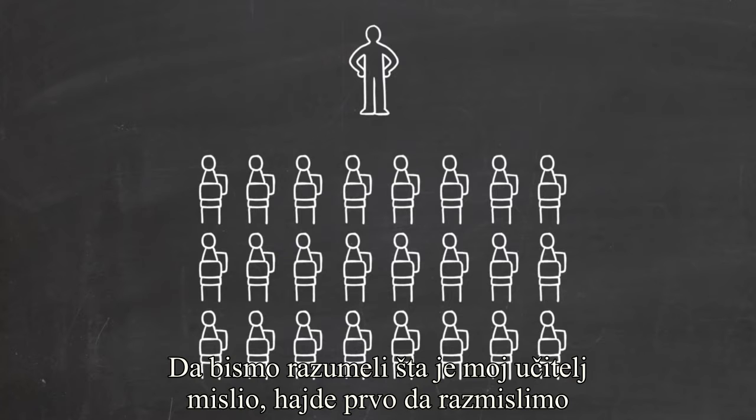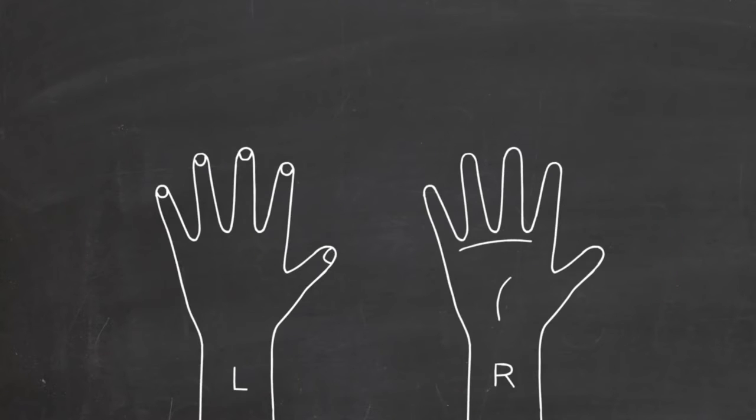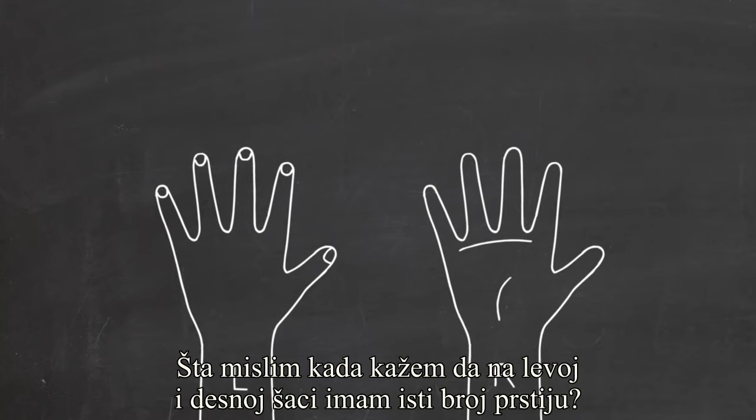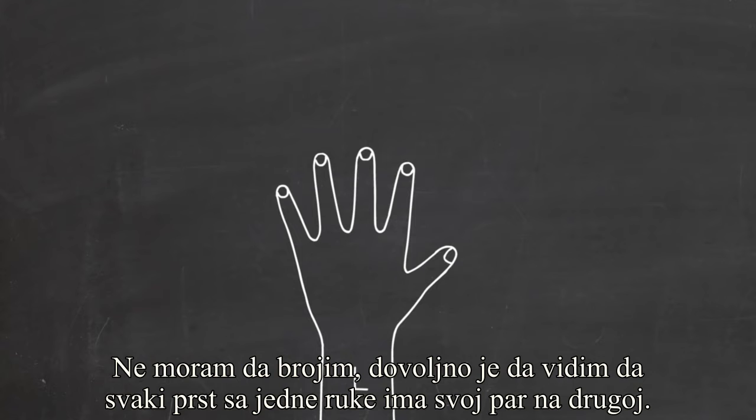To see what my teacher was getting at, let's first think about what it means for two sets to be the same size. What do I mean when I say I have the same number of fingers on my right hand as I do on my left hand? Of course, I have five fingers on each, but it's actually simpler than that. I don't have to count. I only need to see that I can match them up one to one.